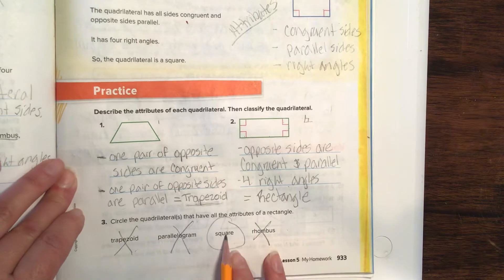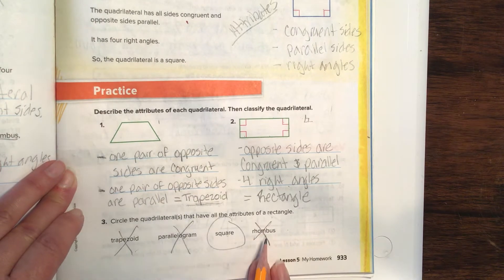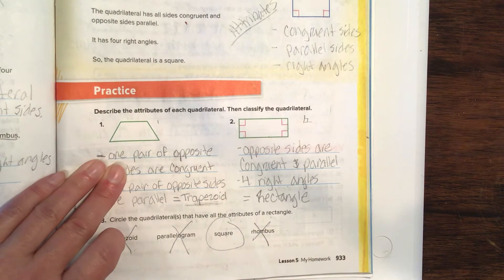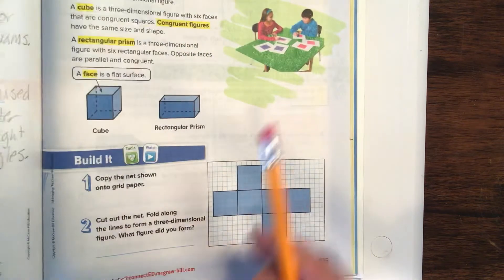So square and a rectangle share the attributes. Turn to 934, please.